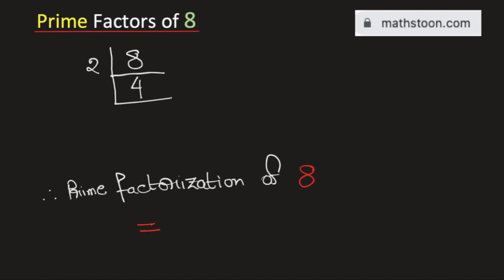Again, 4 is an even number, so we will divide it by 2. And by doing so, we get 2 here.